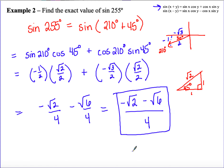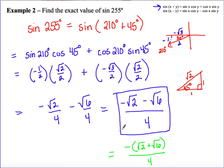One note on the answer format: since both terms are negative, your textbook may factor out the negative and write it as negative times the quantity root 2 plus root 6, all over 4. If you see a positive sign inside when checking answers, don't panic — they've just factored out the negative.